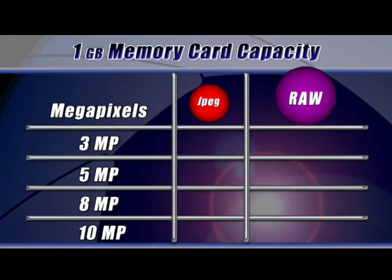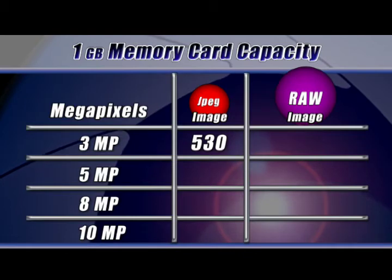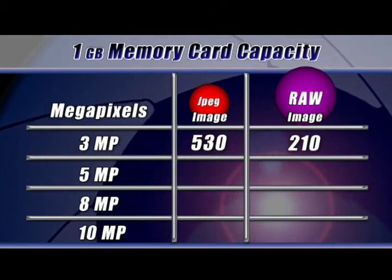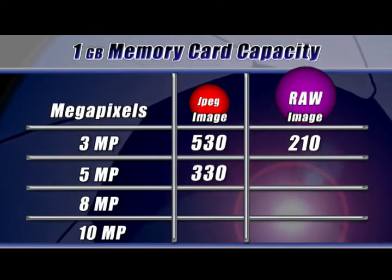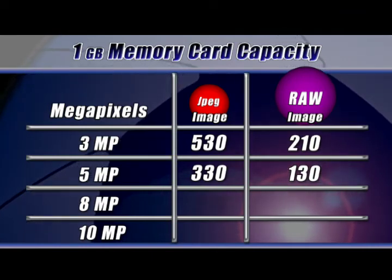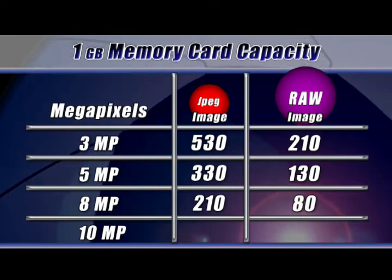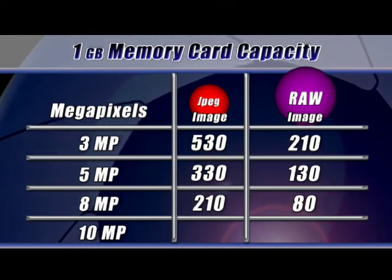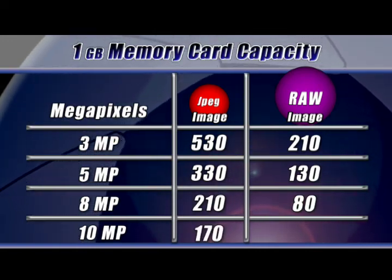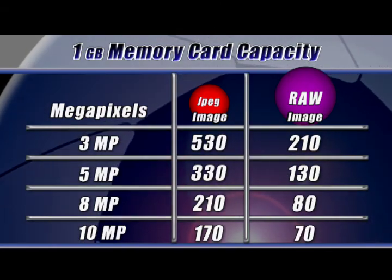With a 1 gigabyte memory card and a 3 megapixel camera, you can fit about 530 JPEGs or 210 RAW files. With a 5 megapixel camera and a 1 gigabyte card, you can hold around 330 JPEGs or 130 RAW files. An 8 megapixel camera allows approximately 210 JPEGs or 80 RAW images per 1 gigabyte card. Finally, with a 10 megapixel camera and a 1 gigabyte card, you can store about 170 JPEGs or 70 RAW files. These numbers are approximate and vary from camera to camera.